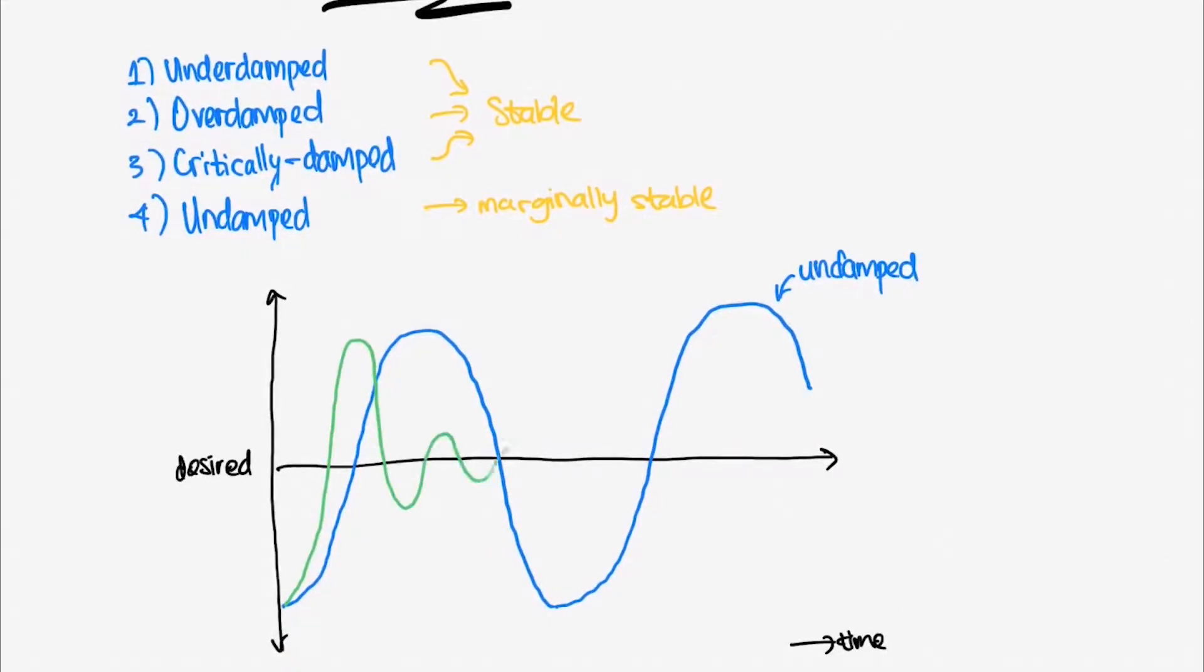While over-damped response has no overshoot. What about over-damped and critically-damped? Critically-damped response has faster response than over-damped response, and without overshoot also.